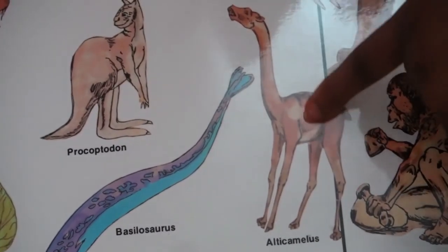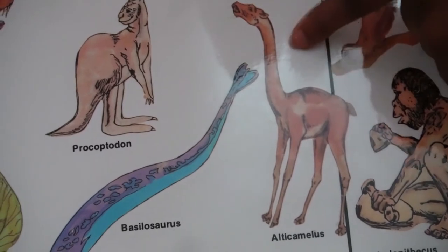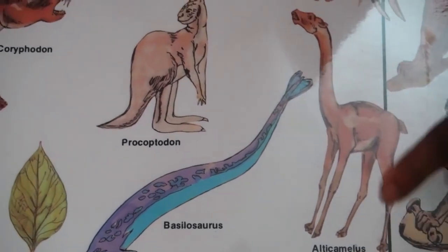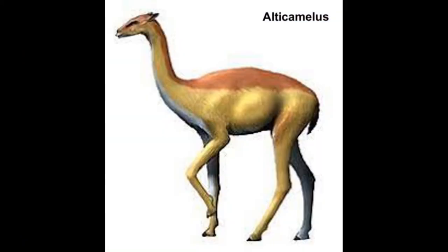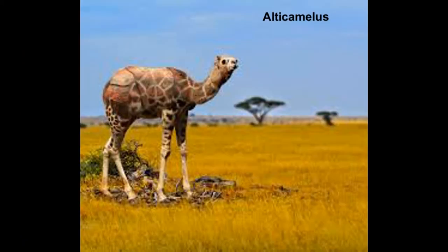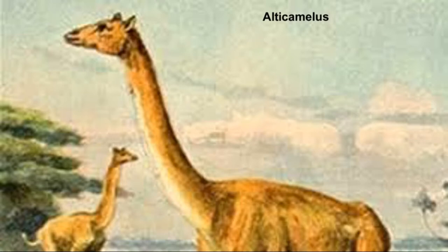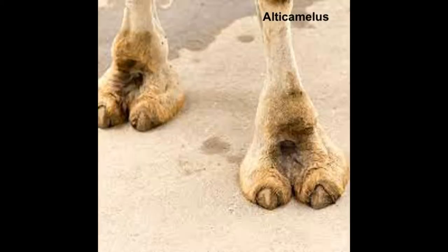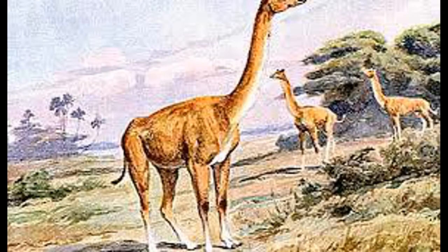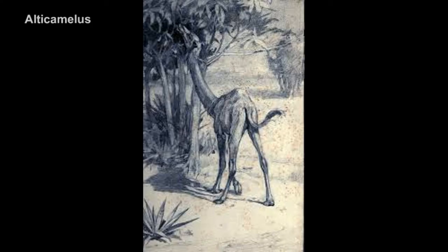Alticamelus was a giraffe-like ruminant that stood 10 feet high. It lived during the Miocene and Pliocene Epochs, resembling both a giraffe and a camel, and was commonly called a giraffe camel. Instead of hoofs, Alticamelus had nails with large pads underneath which allowed it to run better on the grassy plains. Alticamelus grazed by pulling up grass between its toothless upper front gum and lower incisors.